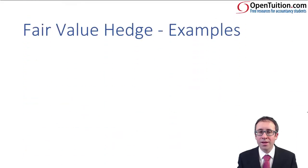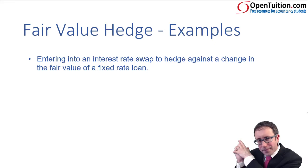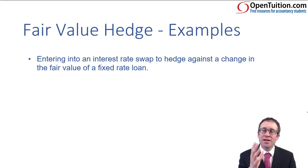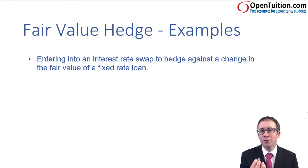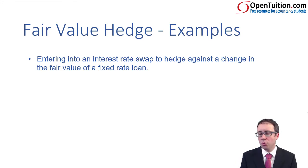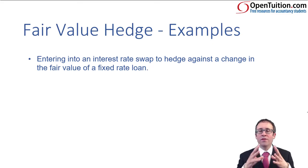Let's have a look at the examples where fair value hedge accounting is usually seen — very useful from an exam perspective. Be careful with this one. Read it. On your cash flow hedge, you're protecting the highly probable future cash flow — so the interest payment on a variable rate loan. The risk there was that interest rates would rise and cause you to pay more interest in the future. We took out an interest rate swap. Here, we've taken out an interest rate swap as well, which makes you think it's the same scenario. But here the reason we've taken out the interest rate swap is not to protect the value of the future cash flows, but to protect the fair value of a fixed rate loan.